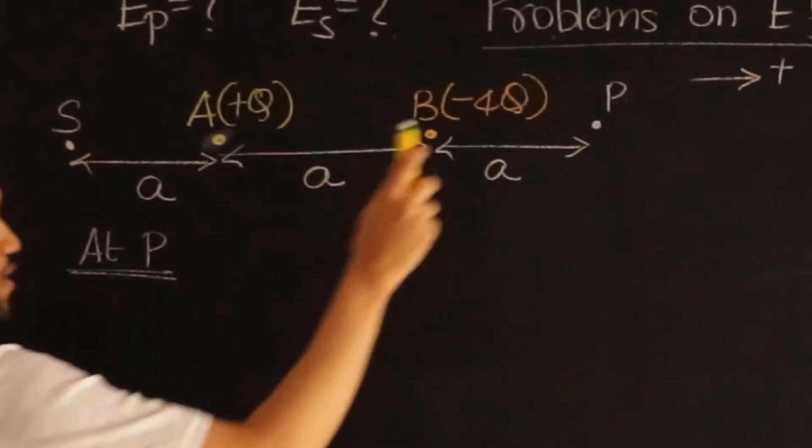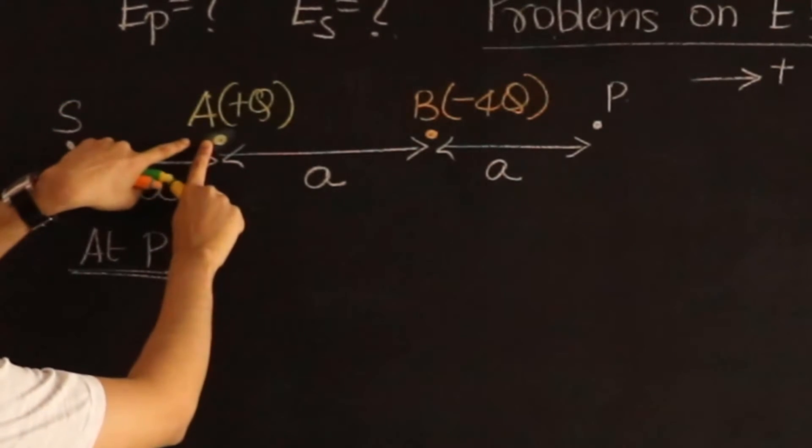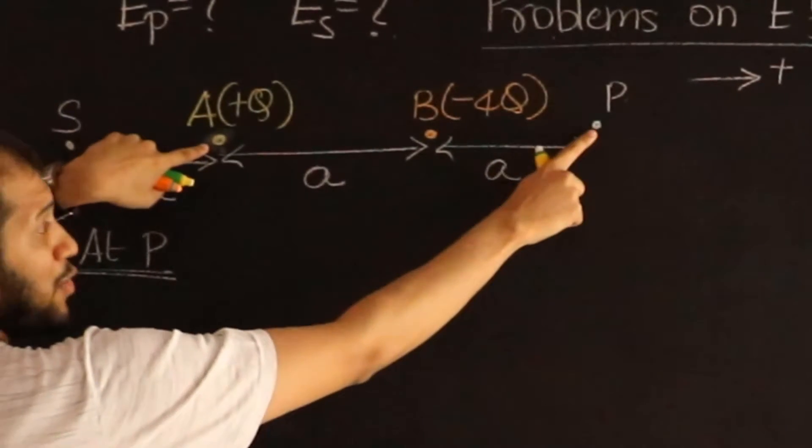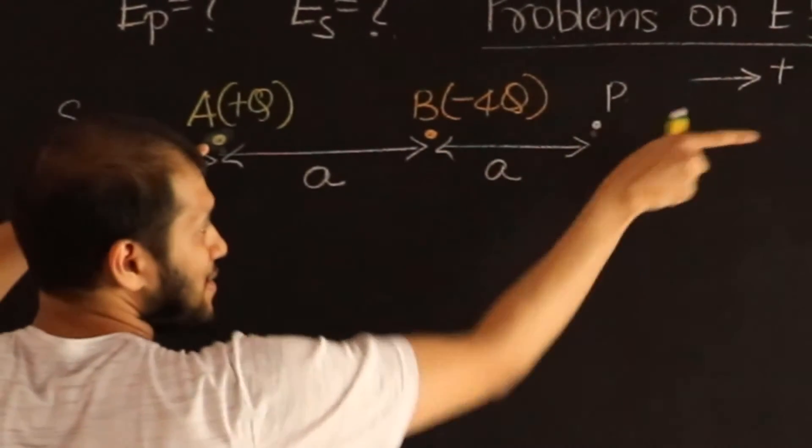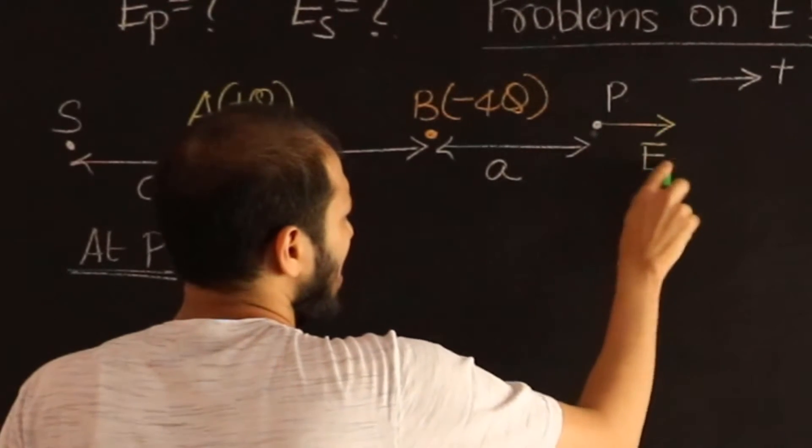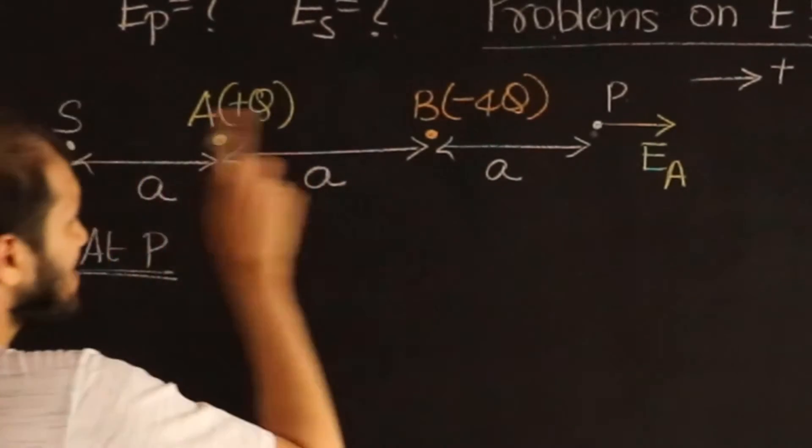So let's concentrate on point P. We have A, which is a positive charge, and positive charge gives an outward field, and therefore A is going to produce a field towards the right. So that field, let me call that as E_A, and it's positive.